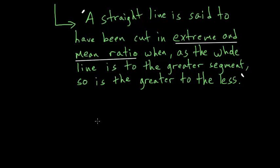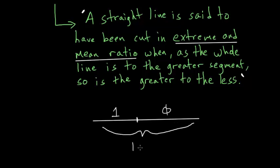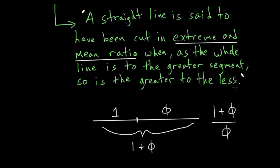This might seem cryptic, but it's actually not too difficult to understand. If we take a line and we cut it so that this length is 1, then this length would be phi, and the entire length of this line is simply 1 plus phi. The statement 'as the whole line is to the greater segment' is talking about the ratio of the whole line to the greater part, which is (1 + phi) divided by phi. And 'the greater to the less' is the ratio of the bigger part to the smaller part, which is phi divided by 1.